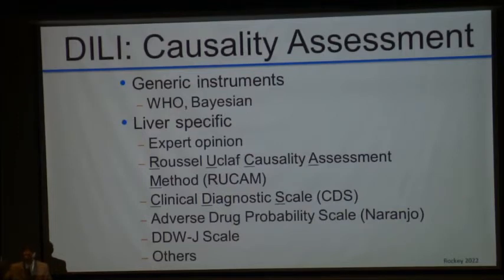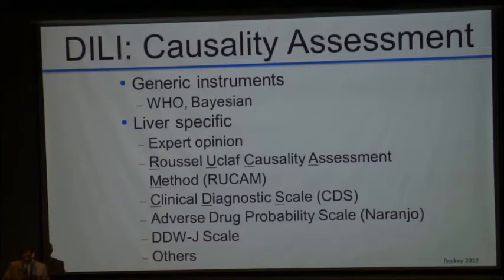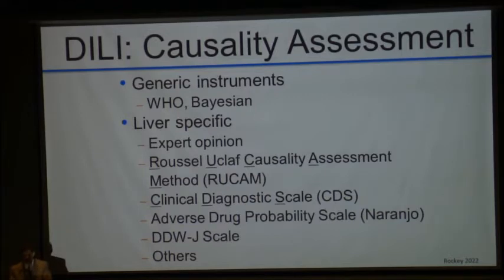There are some other scales including the CDS scale, the adverse drug probability scale or Naranjo scale, a Japanese scale called the DDWJ scale, and some others. I'm going to talk about one of the newer ones.